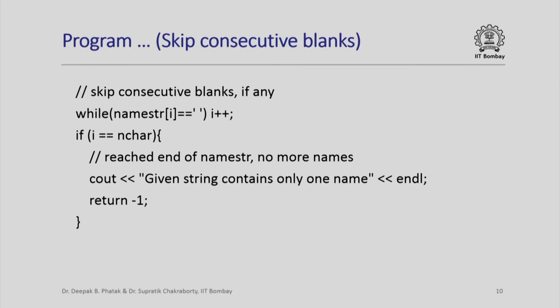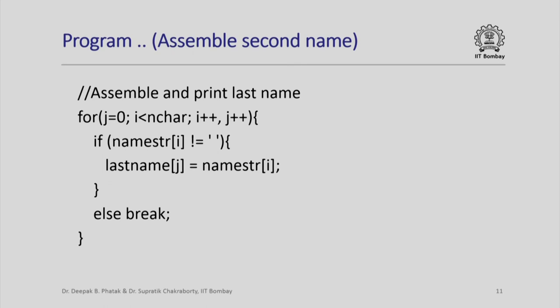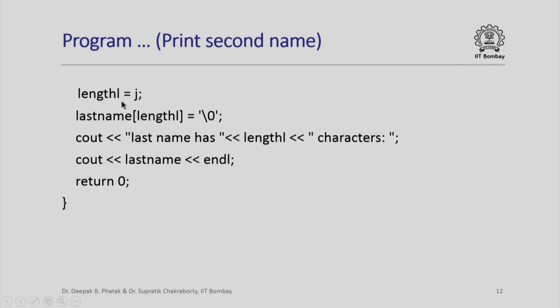On the other hand, if I have two parts, first name and last name as expected, then the last iteration would have taken care of consecutive blanks. I can now assemble and print the last name. This is done exactly in the same way in which the first name was assembled, except that I look for namestr[i] not equal to blank and insert all non-blank characters into lastname jth position. As usual, if I encounter a blank, I will go out of the loop using the break. I will set lengthl as j, put a backslash 0 as the last element, and print the last name is so many characters and this is the value of the last name.